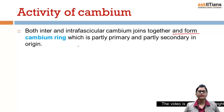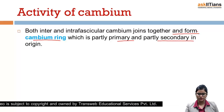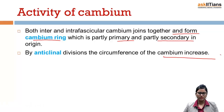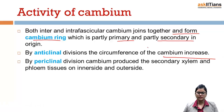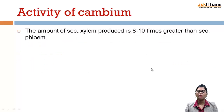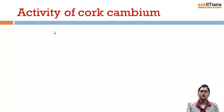Both inter and intrafascicular cambium join together to form a cambium ring, which is partly primary and partly secondary in origin. By anticlinal divisions, the circumference of the cambium increases. By periclinal divisions, cambium produces secondary xylem and phloem tissue on the inner side and outer side. The amount of secondary xylem produced is eight to ten times greater than secondary phloem.